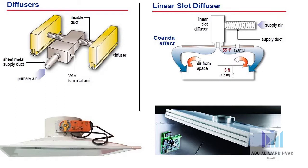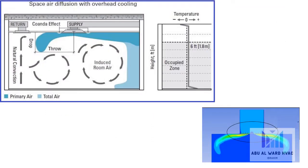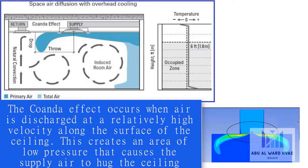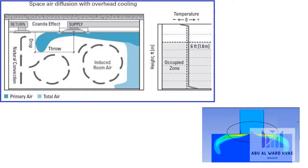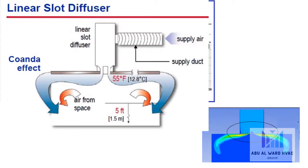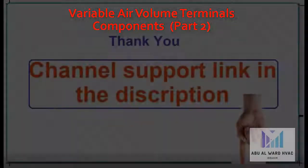Linear slot diffusers are generally preferred for VAV air distribution. They use a principle known as the Coanda effect to distribute air to the conditioned space. The Coanda effect occurs when air is discharged at a relatively high velocity along the surface of the ceiling, creating an area of low pressure that causes the supply air to hug the ceiling. As it travels along the ceiling, air from the space is drawn into and mixed with the supply air stream. When the air settles to the occupied levels of the space, it has reached an average temperature. The design of linear slot diffusers allows them to effectively distribute air over a wide range of airflows, making them the preferred diffuser for VAV systems. They also offer acoustical benefits over other types of diffusers.